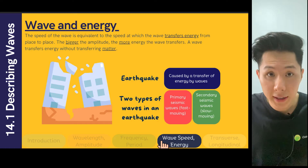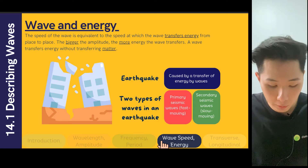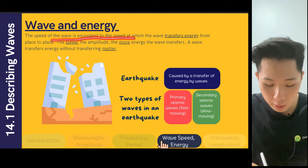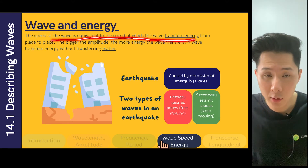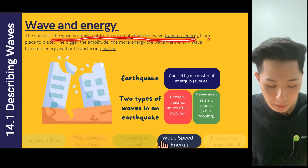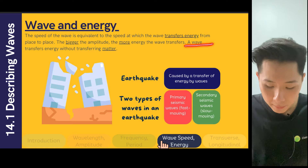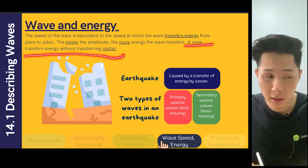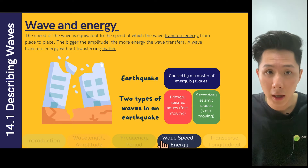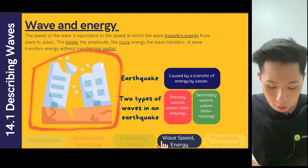Wave is a good model for us to understand how energy is transferred. The speed of a wave is equivalent to the rate at which the wave transfers energy from place to place. The bigger the amplitude, the more energy it transfers. A wave transfers energy without transferring matter. In our ripple tank example, only the energy moves, not the water molecules.